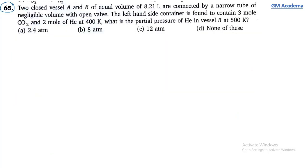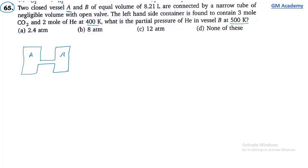Question 65: Two closed vessels A and B of equal volume 8.21 liters are connected by a narrow tube of negligible volume with an open valve.